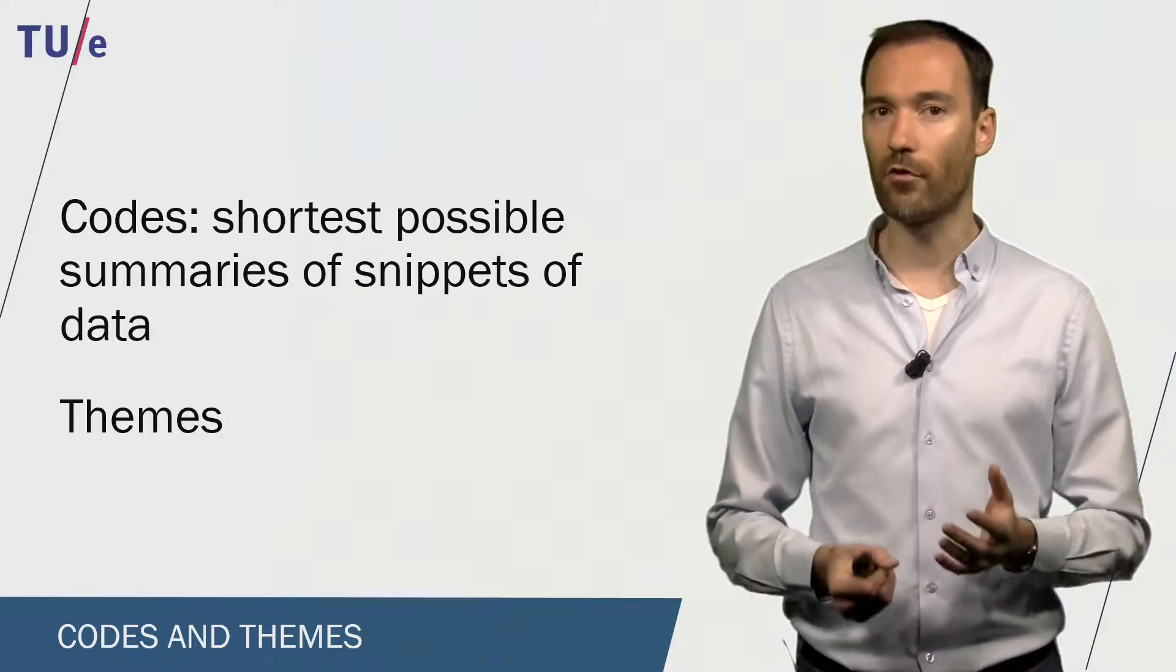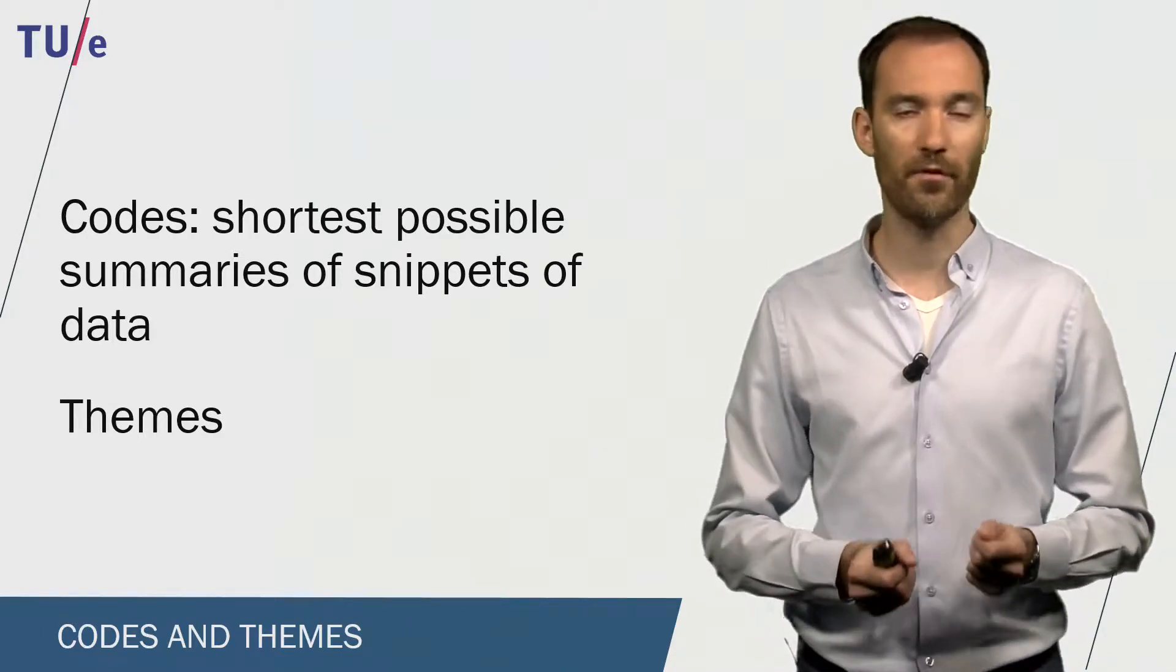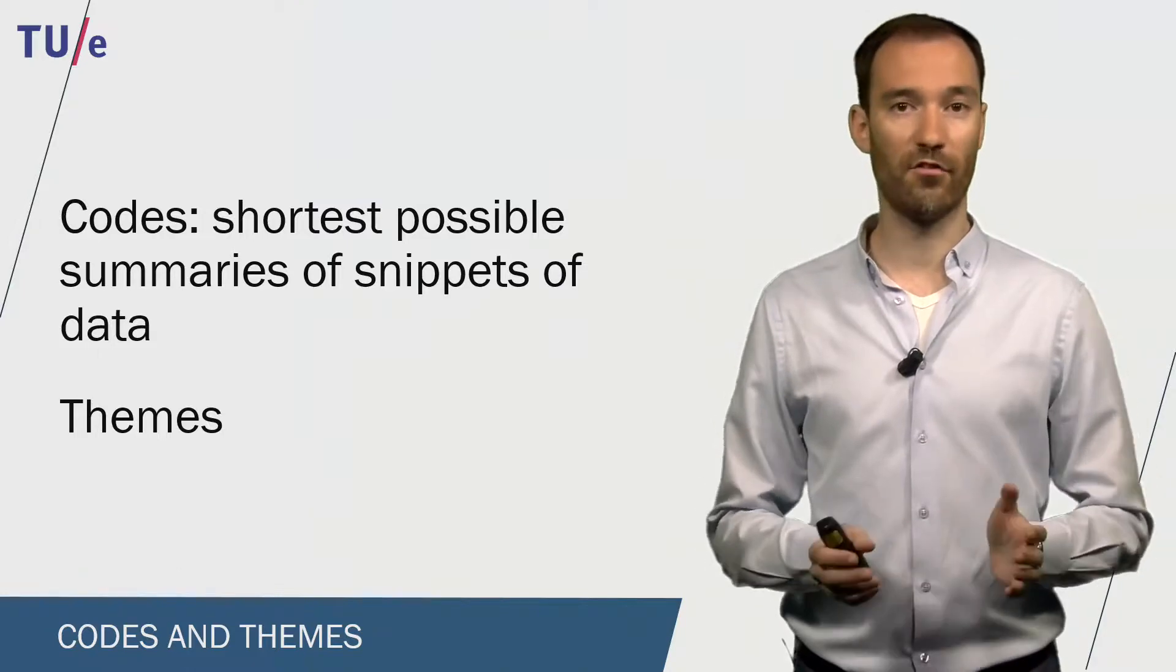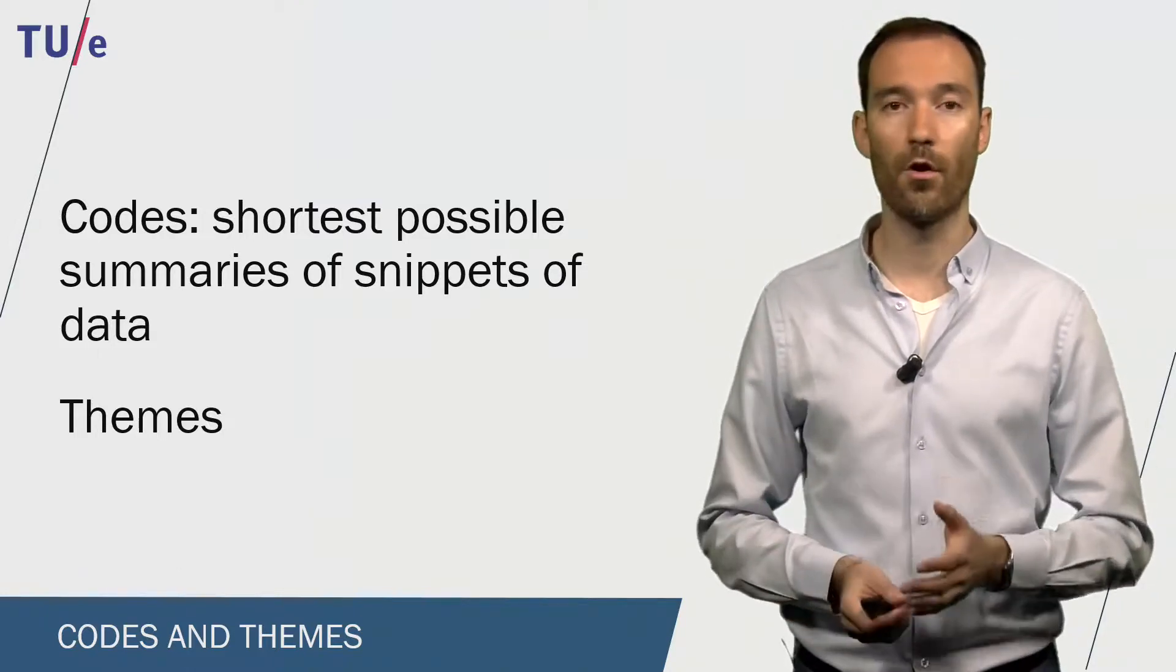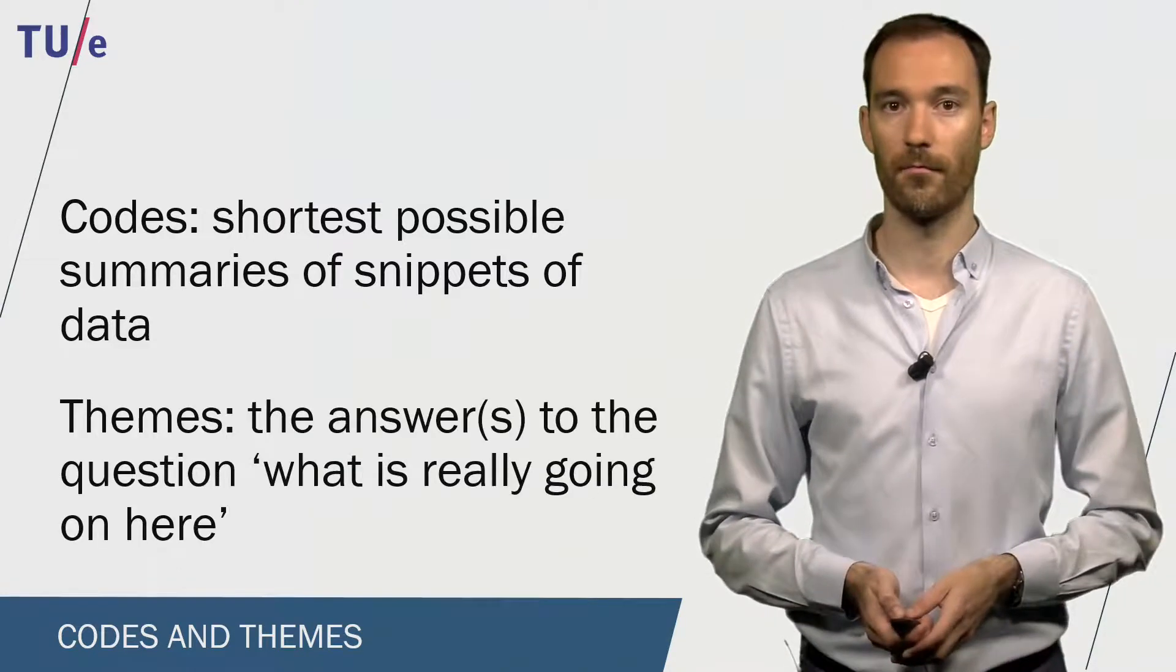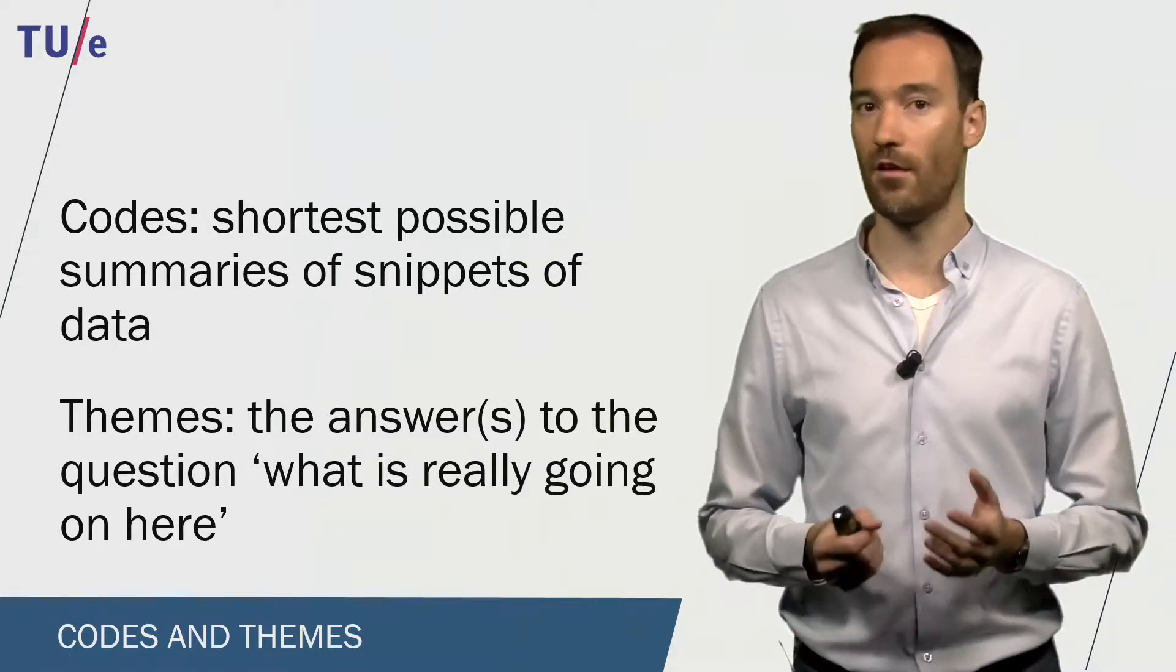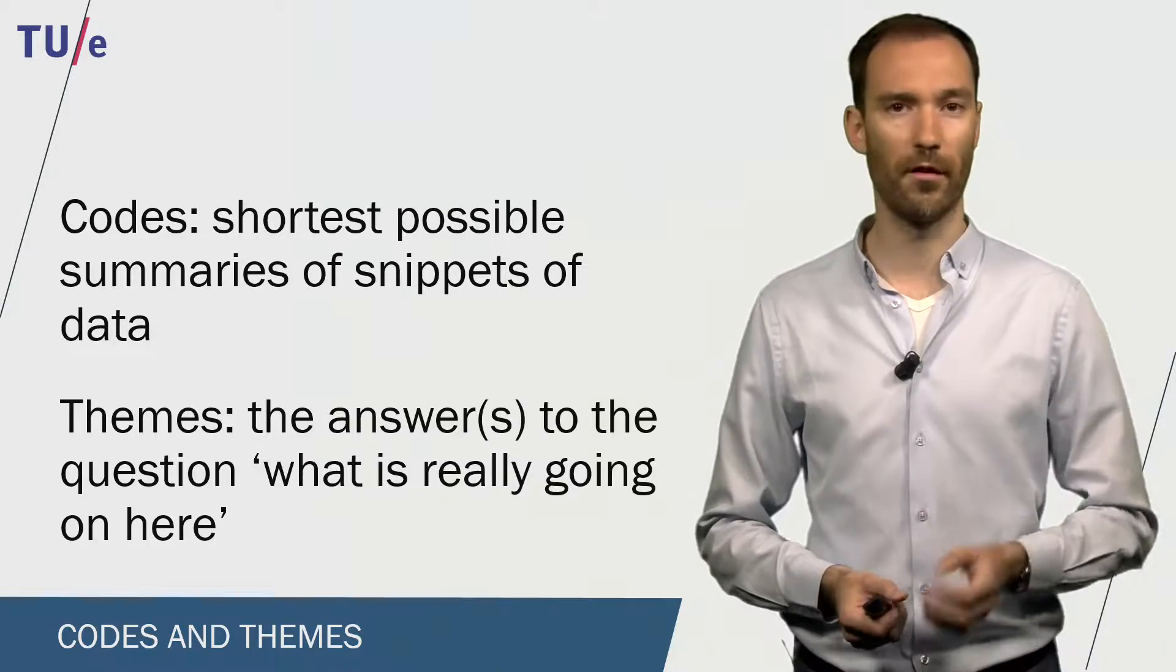Codes can be seen as the shortest possible summary of snippets of your data. So to make a code, you summarize a sentence or a part of a sentence in one or multiple words. And themes can be seen as the answer to your research question, the answer to the question, what is really going on here?